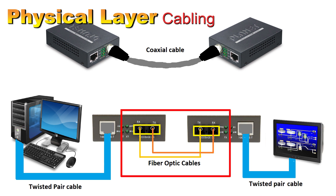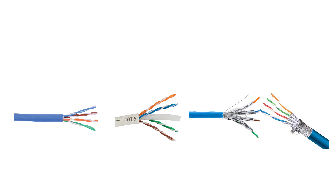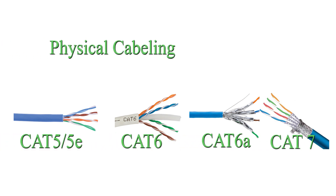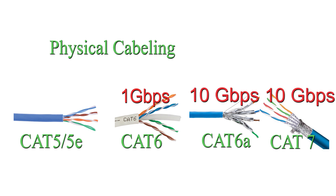The most common cable is the twisted pair cable. The latest are category 6 with speeds up to 1 gigabit per second, and category 6a and category 7 with speeds up to 10 gigabits per second. Category 5 and 5e are still used in many existing applications but support lower speeds up to 100 megabits per second.